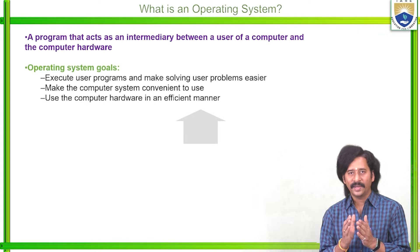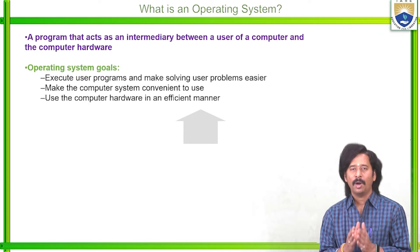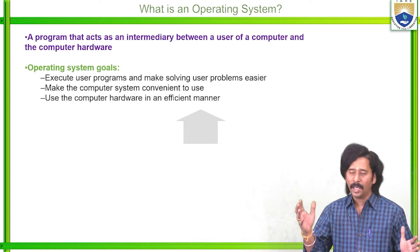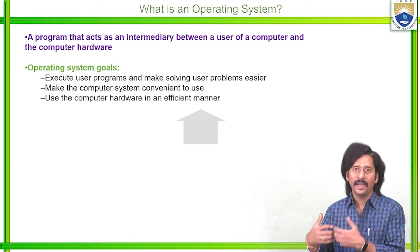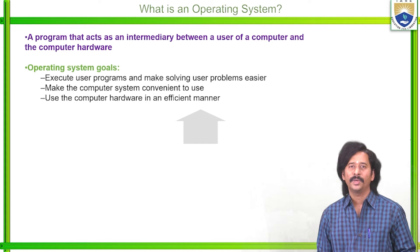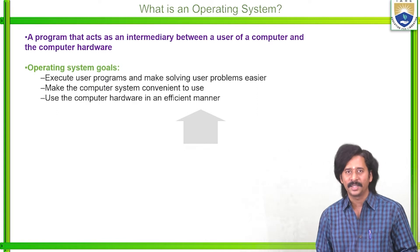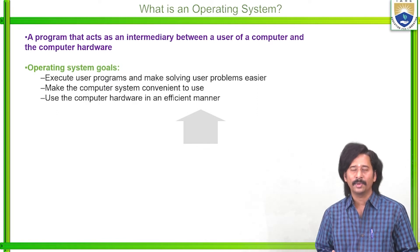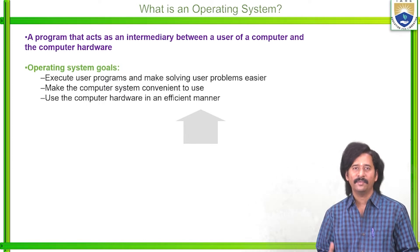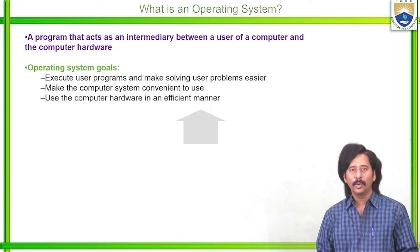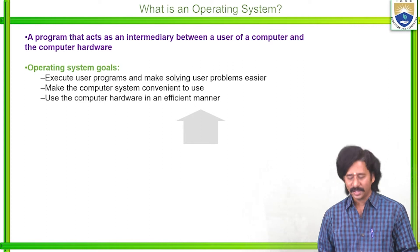The operating system acts as an interface between the user and the system hardware. To summarize, the three major goals are: first, execute user programs and make solving user problems easier; second, make the computer system convenient to use; and third, use the computer hardware in an efficient manner.